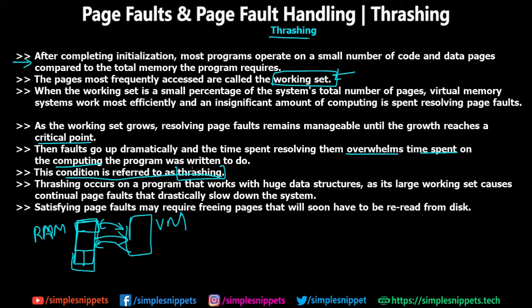When thrashing happens, the entire system slows down. In simple terms, thrashing is uncontrolled swapping of pages between physical memory (RAM) and virtual memory due to page faults. This was the last topic to cover about page fault and page fault handling.